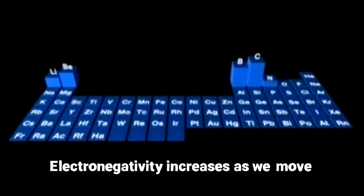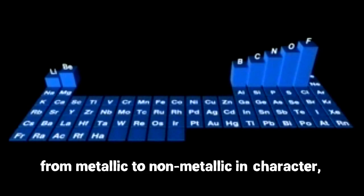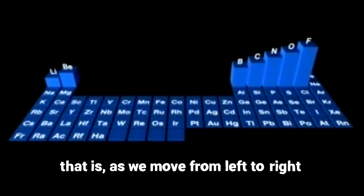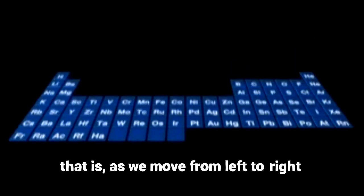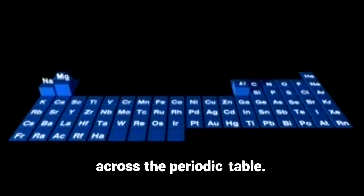Electronegativity increases as we move from metallic to non-metallic in character, that is, as we move from left to right across the periodic table.